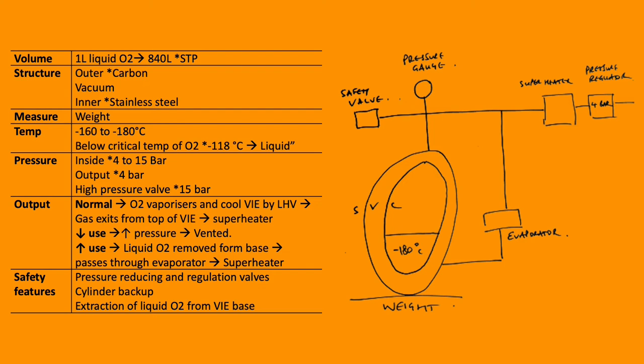Under low demand, the rate of oxygen use is less than the O2 gaseous production. Therefore excess O2 gas is vented by the safety valve.